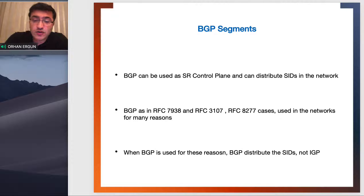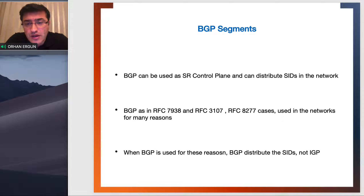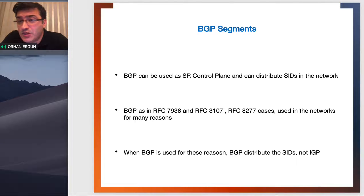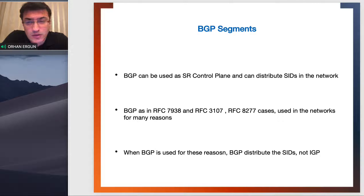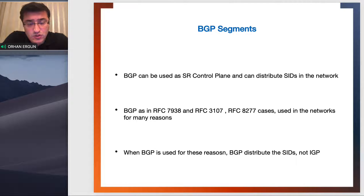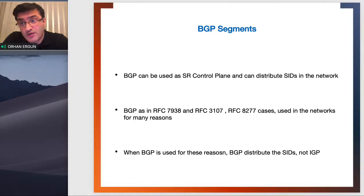BGP can be used for the SR control plane and can distribute the segment IDs — so labels. BGP is in RFC 7938, which means using BGP as IGP in hyperscale networks, and RFC 3107, which means BGP labeled unicast, used in many applications such as inter-AS MPLS VPN option C, carrier supporting carrier, seamless MPLS, and so forth. RFC 8277 is the updated version of 3107. BGP labeled unicast supports both IPv4 and IPv6.